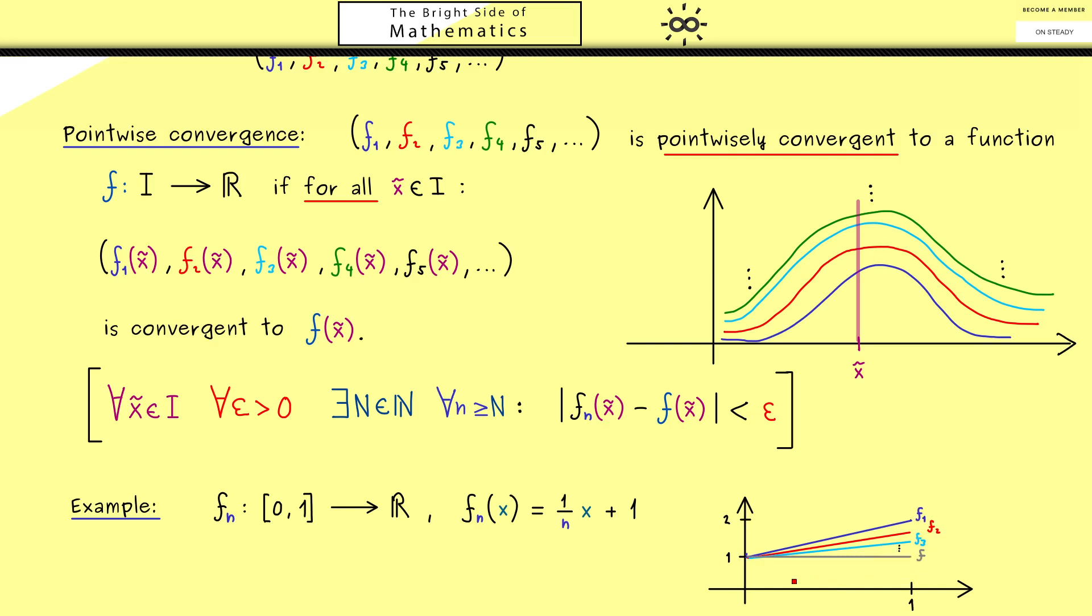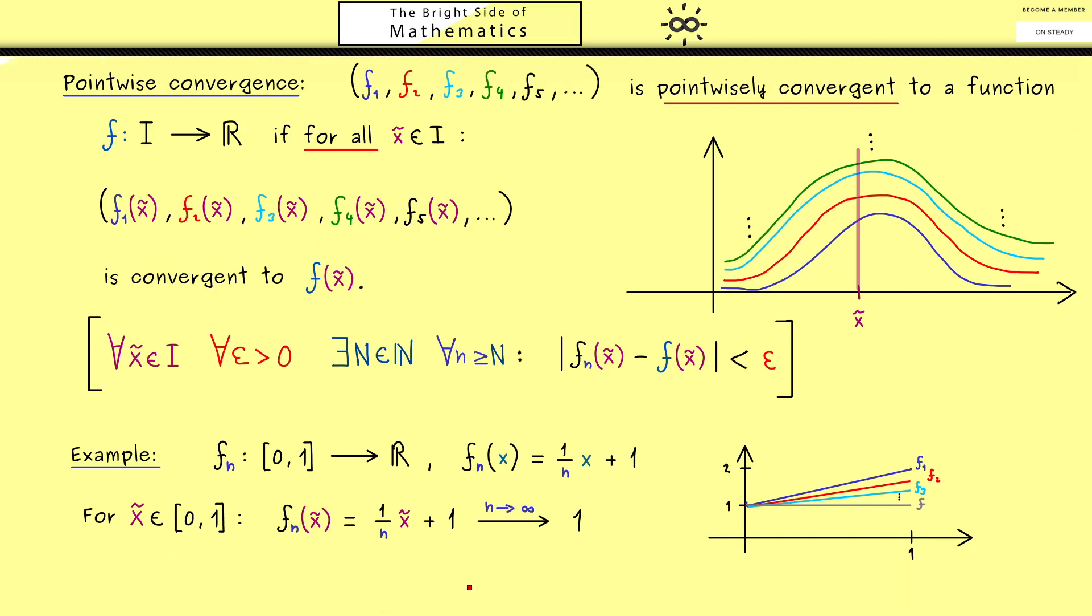The graph of the limit function should be this horizontal line. We can also immediately calculate this by fixing a point x tilde and looking what happens. For fixed x tilde, we have our sequence of numbers, and we immediately see this is 1/n, which is convergent to 0. Hence by our limit theorems the whole sequence goes to 1. This happens no matter what x tilde exactly is, so our limit function is the constant function. To be more concrete, we should call it the pointwise limit function f.